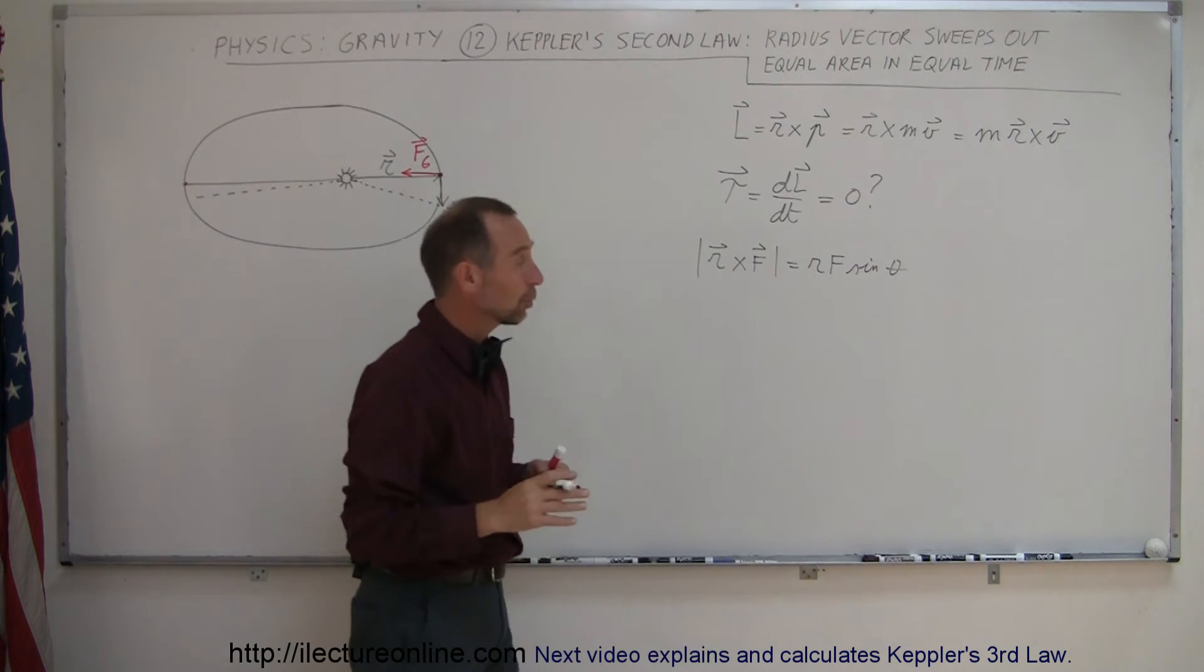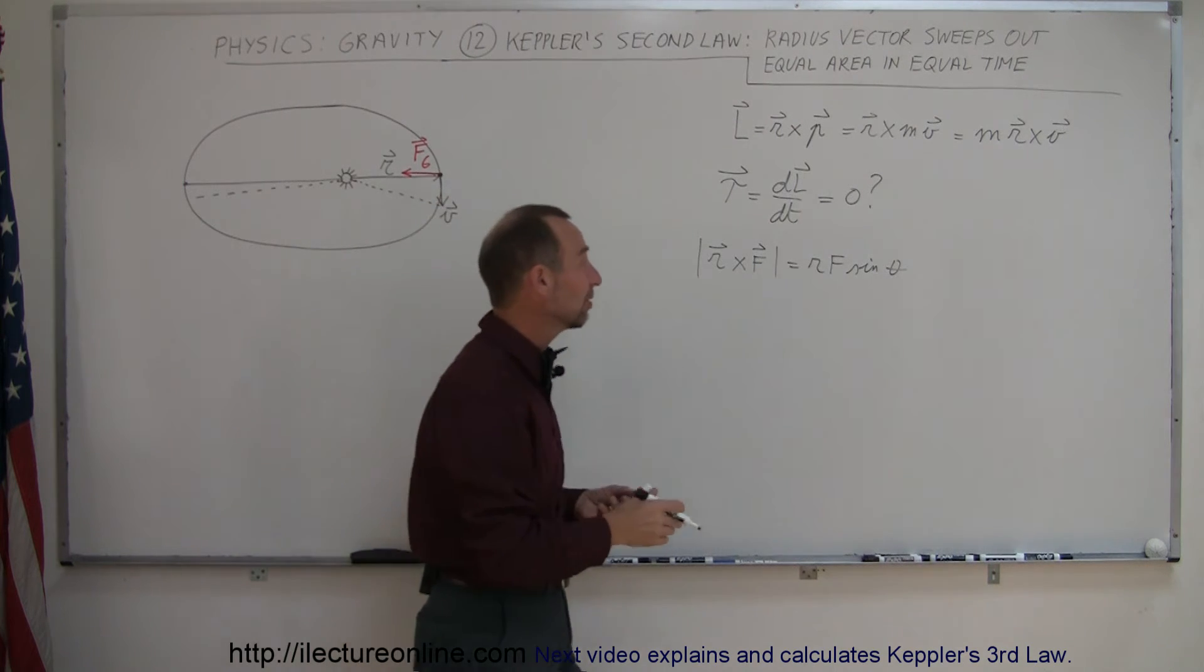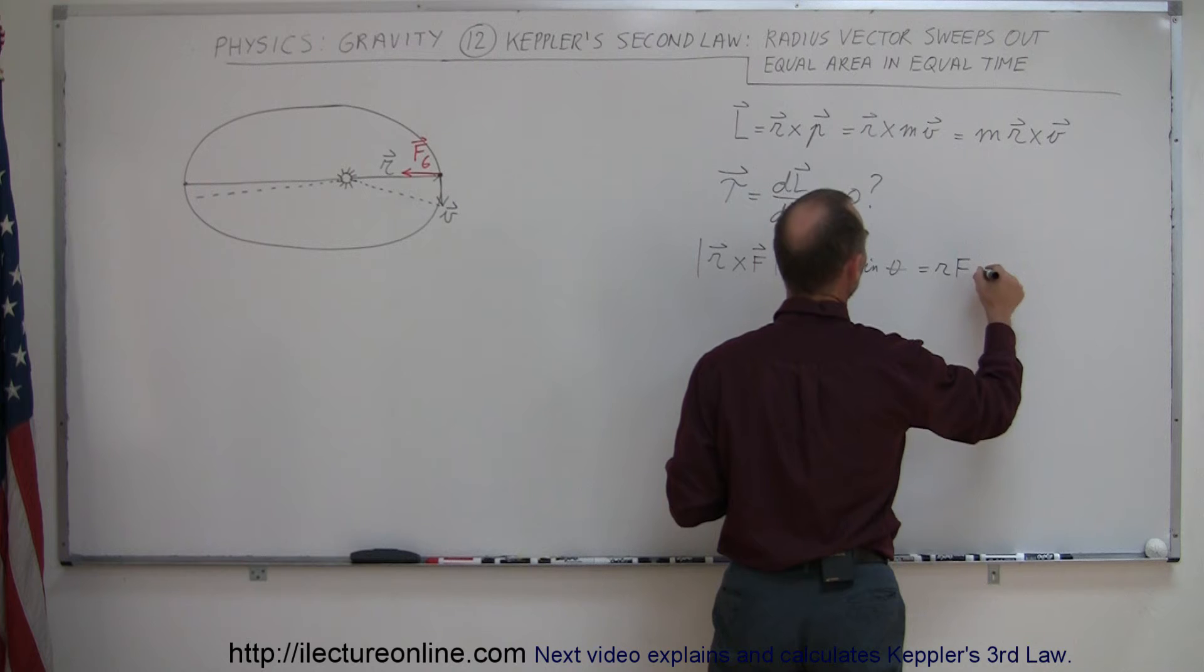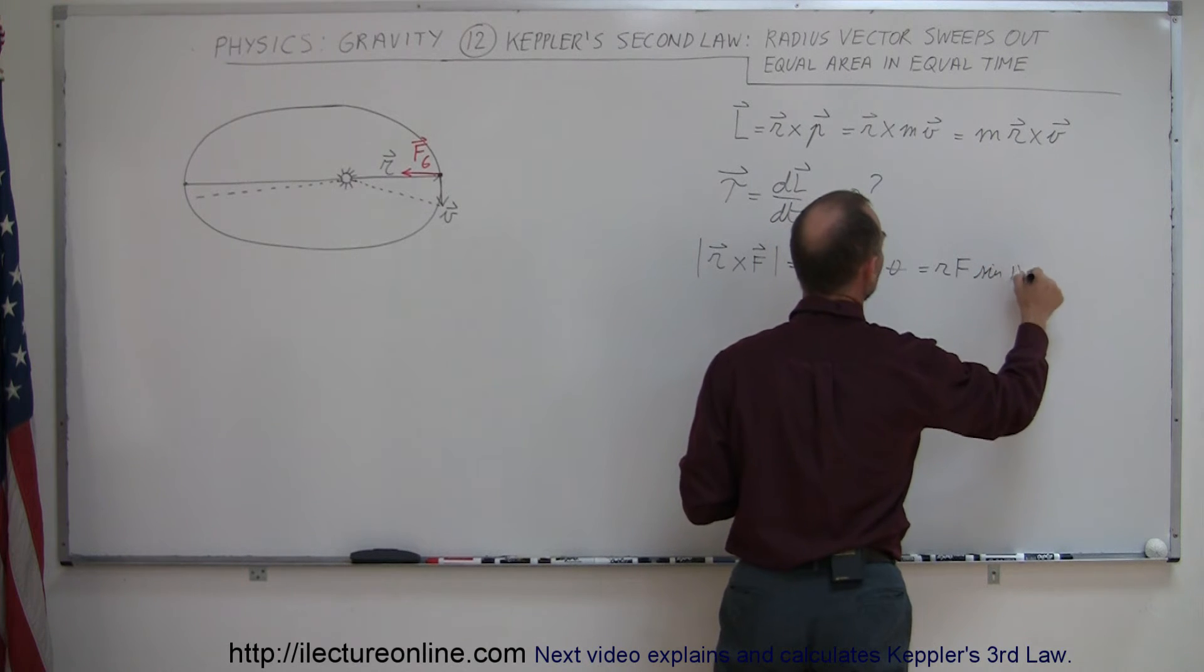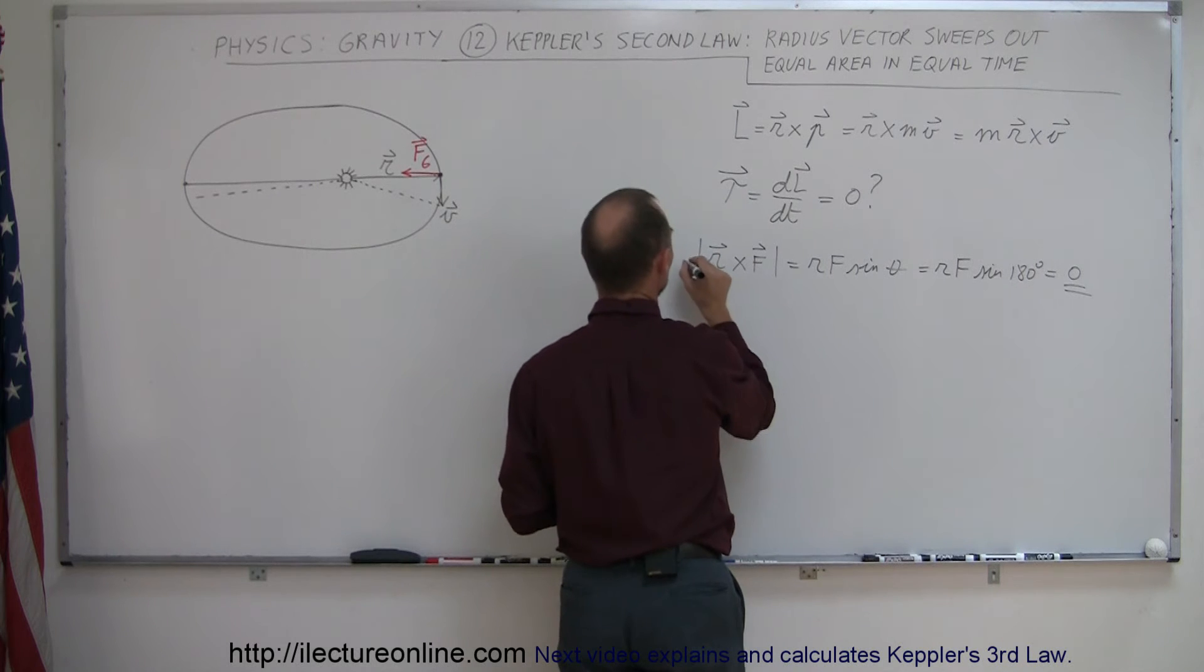And you also know that r cross f, the magnitude of r cross f is equal to r times f times the sine of the angle between them. And of course, if the angle between them is either zero or 180, which in this case it's 180, that has to be zero. So this is equal to r times f times the sine of 180 degrees, which is equal to zero, which shows that the torque is equal to zero.